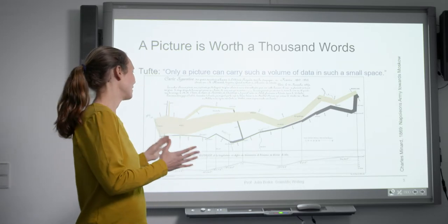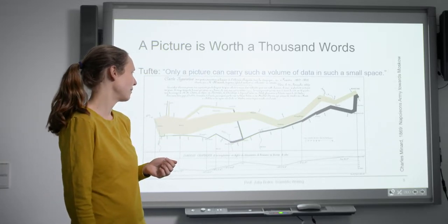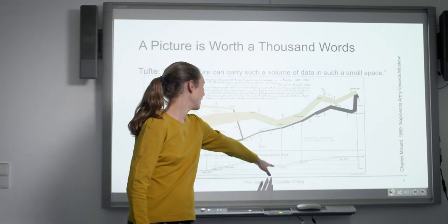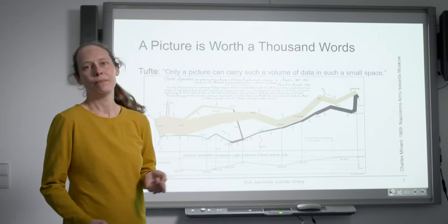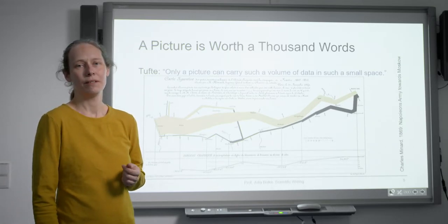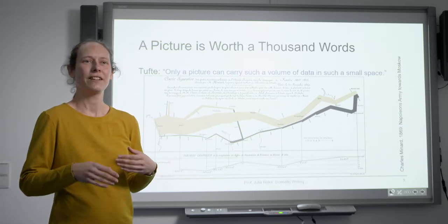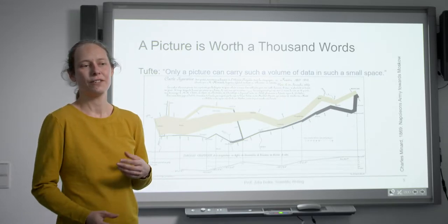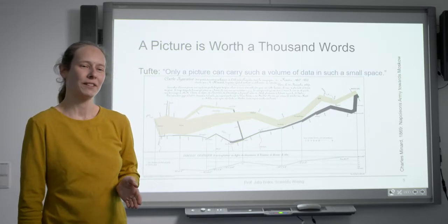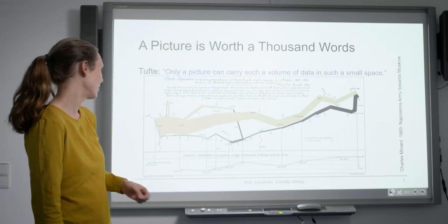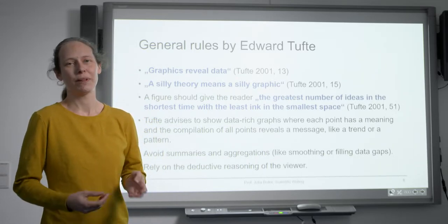And then the black line is the way back. So basically, very few people made it home again. And this is a very impressive way of showing all these numbers. To summarize this graph, you would need a lot of pages of text, and this is much more easy to understand in this way. Also, he put some additional information like air temperature on the way back to show that it was super cold and that also played a role in diminishing his army size.